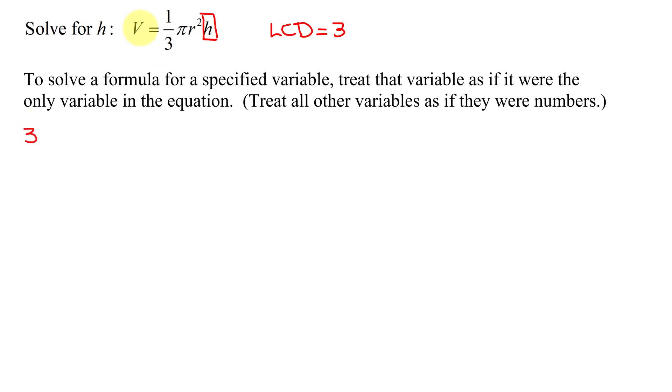So I get 3 times v equals, on the right-hand side, since one-third is a fraction, I'm going to turn my LCD into a fraction by dividing it by 1. So I have 3 divided by 1 multiplied by the right-hand side of one-third pi r squared h. These two 3's reduce, so I get 3v equals pi r squared h.